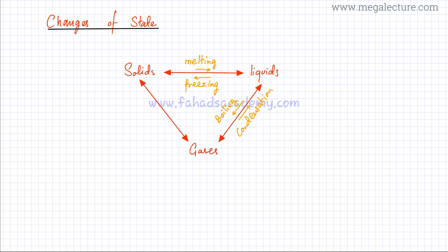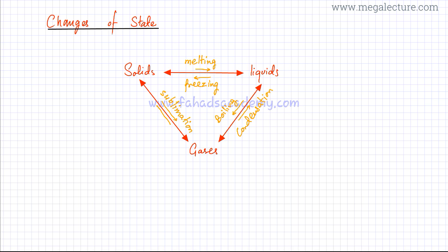In some rare cases you can have solids directly changing into gas; that is known as sublimation. Vice versa, gas changing directly into a solid is called deposition.